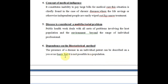The next dimension is dependence on biostatistical methods. The presence of a disease in an individual patient can be described on a yes-or-no basis, but this is not possible in a population because there are large numbers of people and the distribution and determinants vary greatly. To prove causation, we must apply statistical methods, so biostatistics is a key element in public health work.